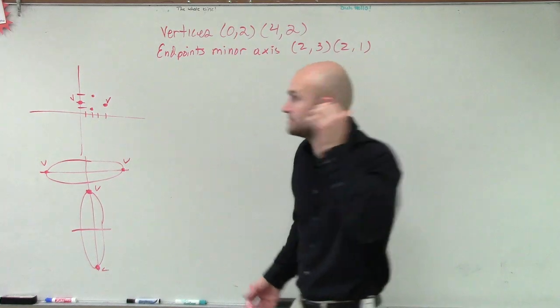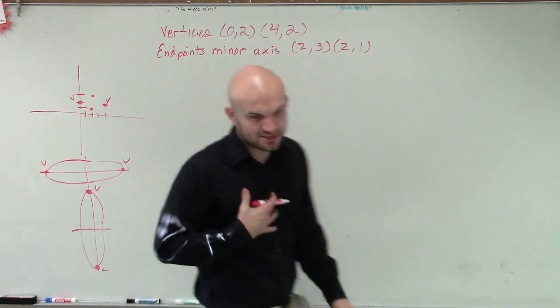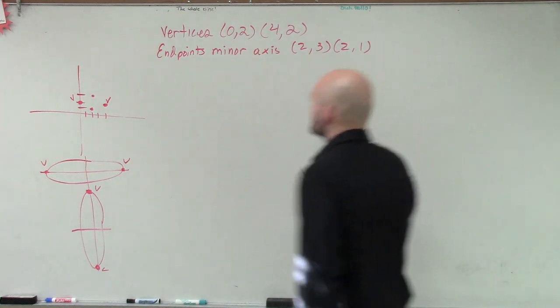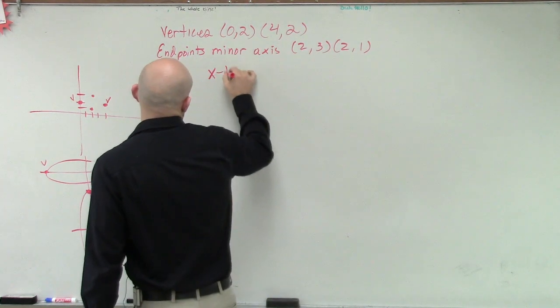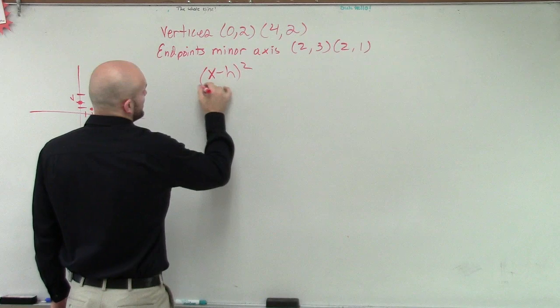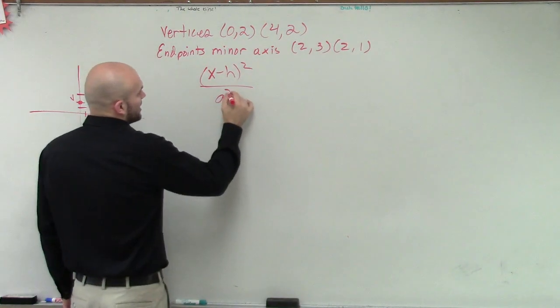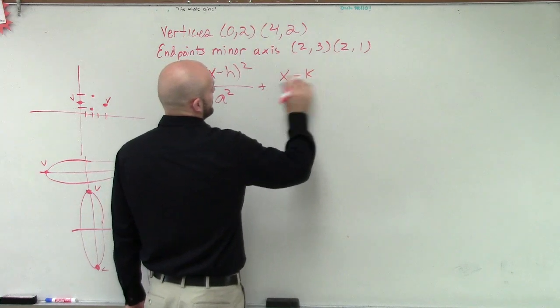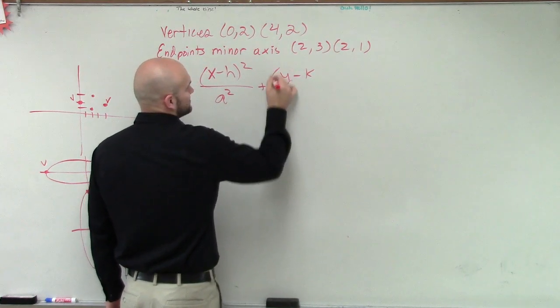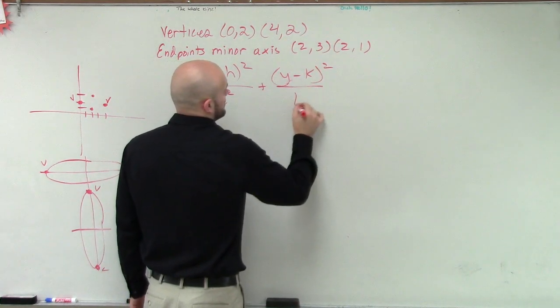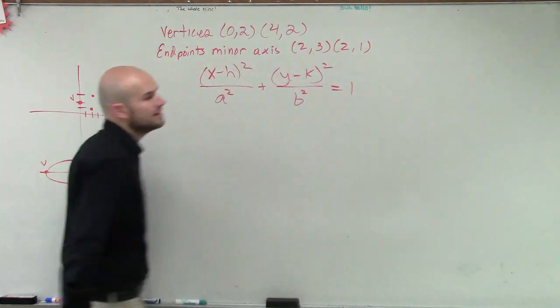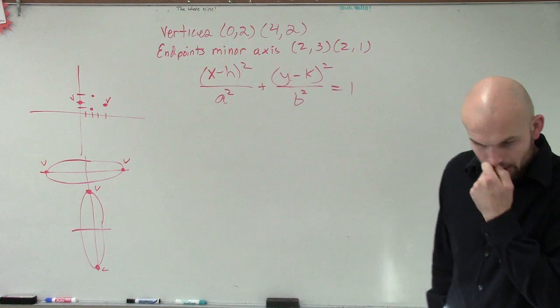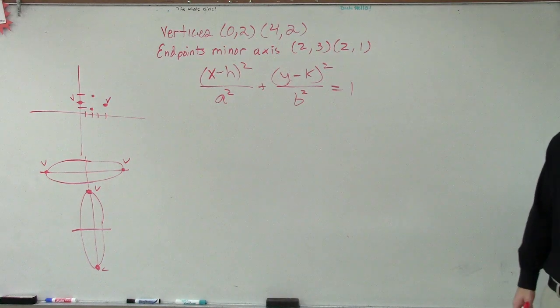let's go ahead and write out the formula for it. Because they're asking us to find the standard form of the equation. So we have x minus h squared, since it's horizontal, a squared, give it a little bit, plus x minus k, or sorry, y minus k. So we have that.